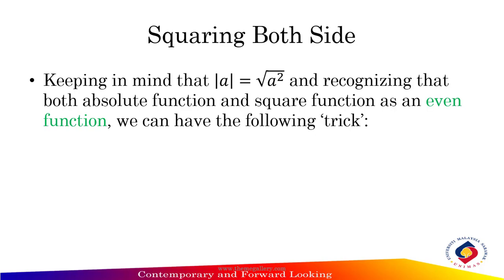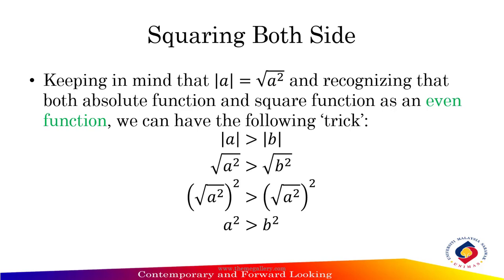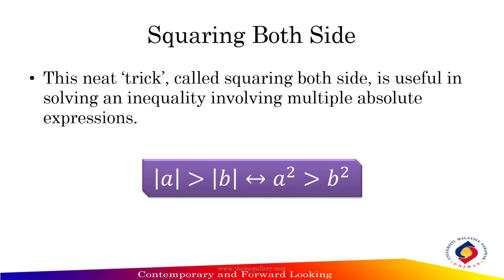Squaring both sides: modulus of a equals square root of a squared. Recognizing that both the absolute value function and the square function are even functions. Therefore, modulus of a greater than modulus of b implies that a squared is greater than b squared. Squaring both sides is useful in solving inequalities involving multiple absolute value expressions.